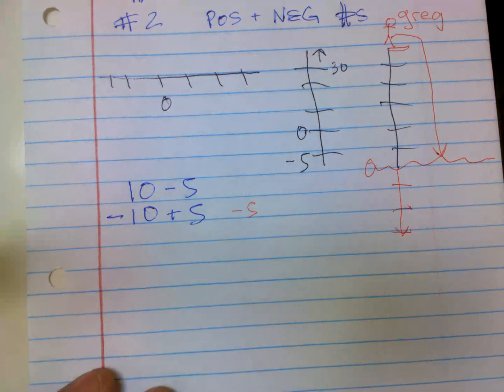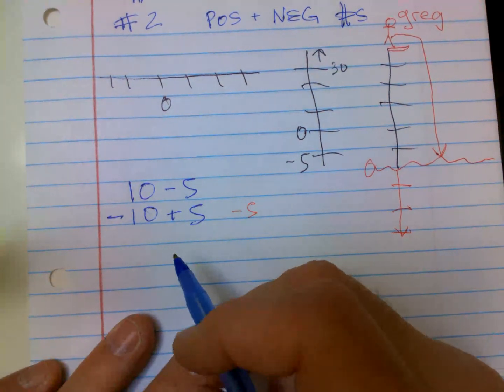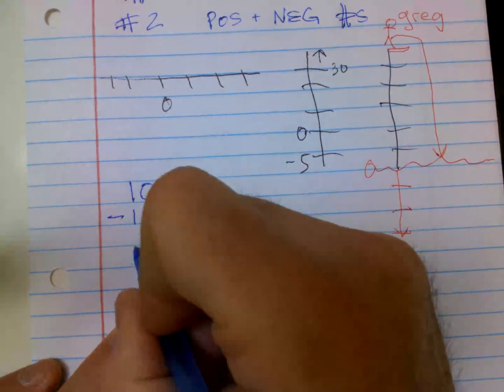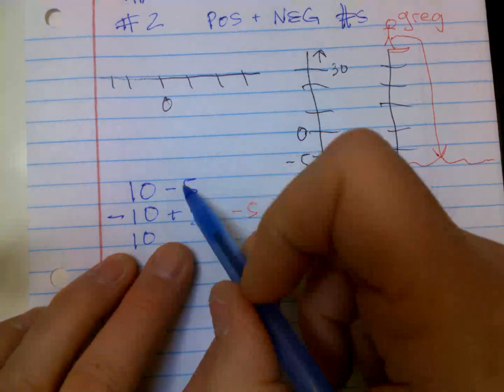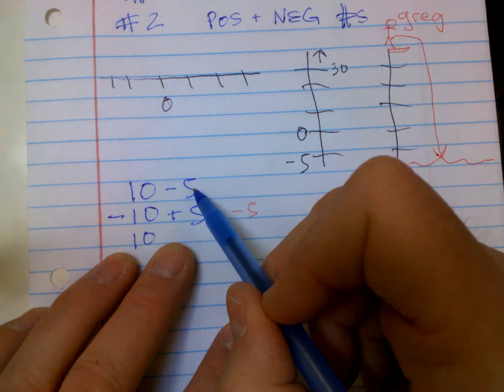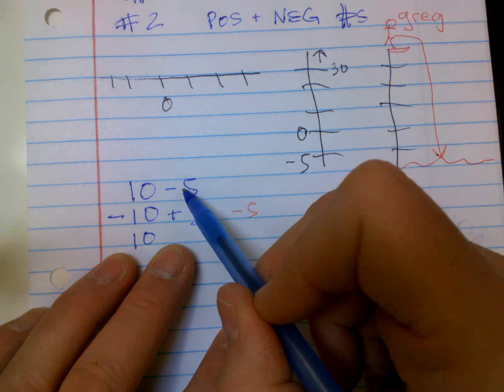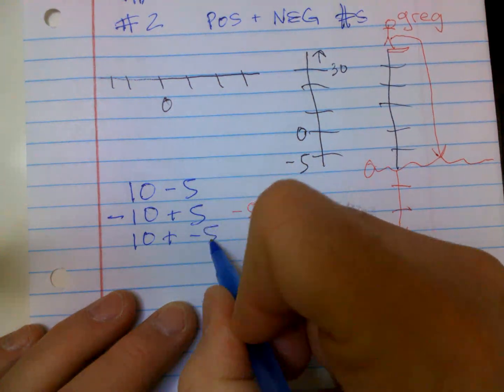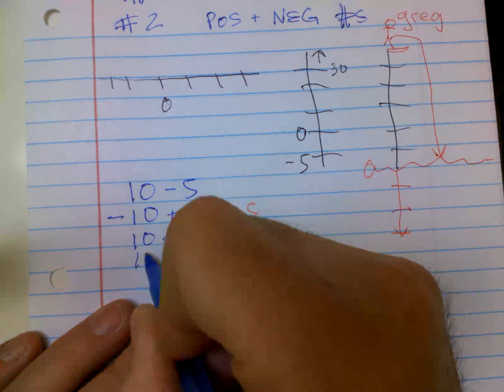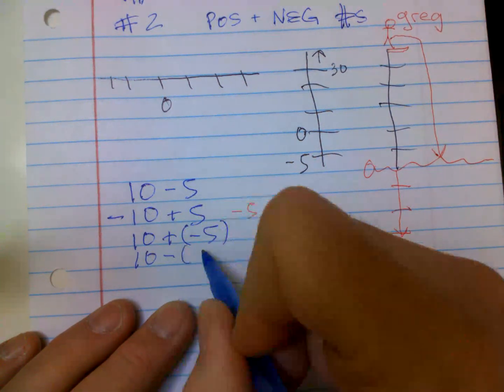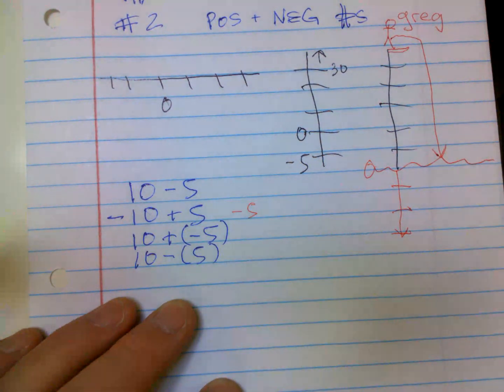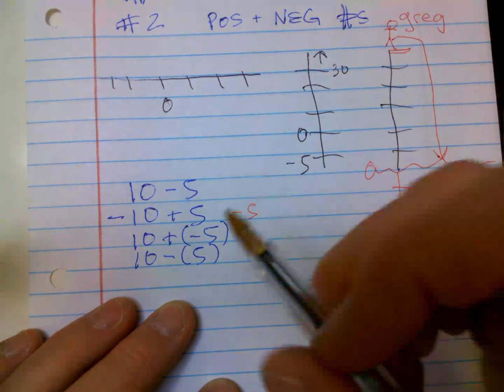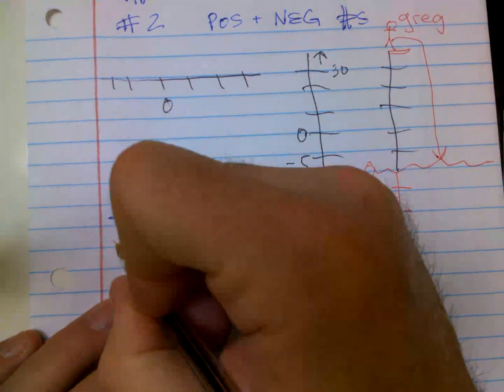But I just wanted to show you, it gets confusing. And I've heard this many years as well, where this 10 up here, minus 5, there'll be, is that 10 minus 5? Or is it 10 plus a negative 5? Or is it 10 minus a positive 5? Okay, they're all the same thing, okay? Check, check, check.